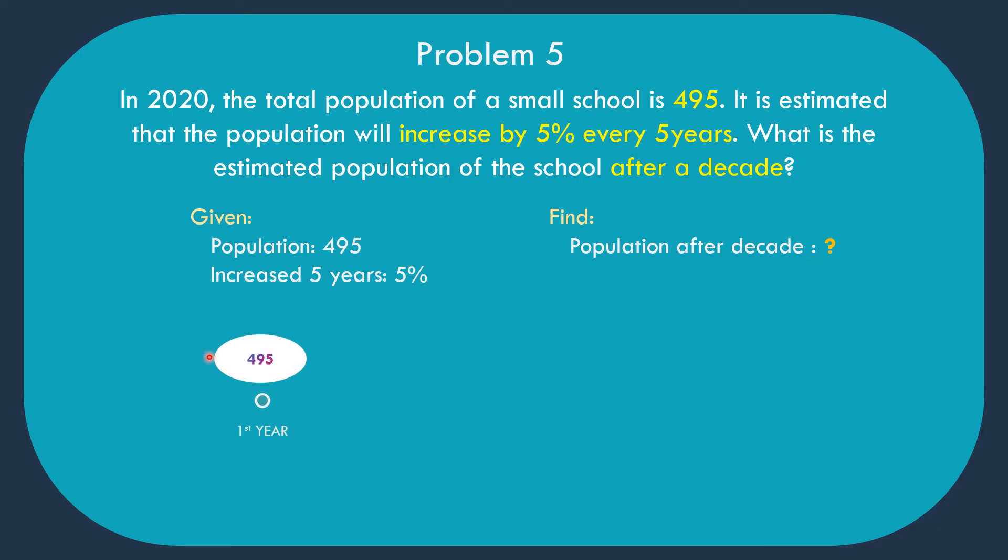The population is 495, increase after 5 years is 5%. In the first year, the population is 495. After 5 years, so 6 years total, the increase is 5%, so 495 times 0.05 is 24.75. 24.75 plus 495 equals 519.75 or 520 in the nearest whole number. After 5 more years, the 11th year, 520 times 0.05 is 26. 26 plus 520 equals 546. The population of the small school after a decade is 546.